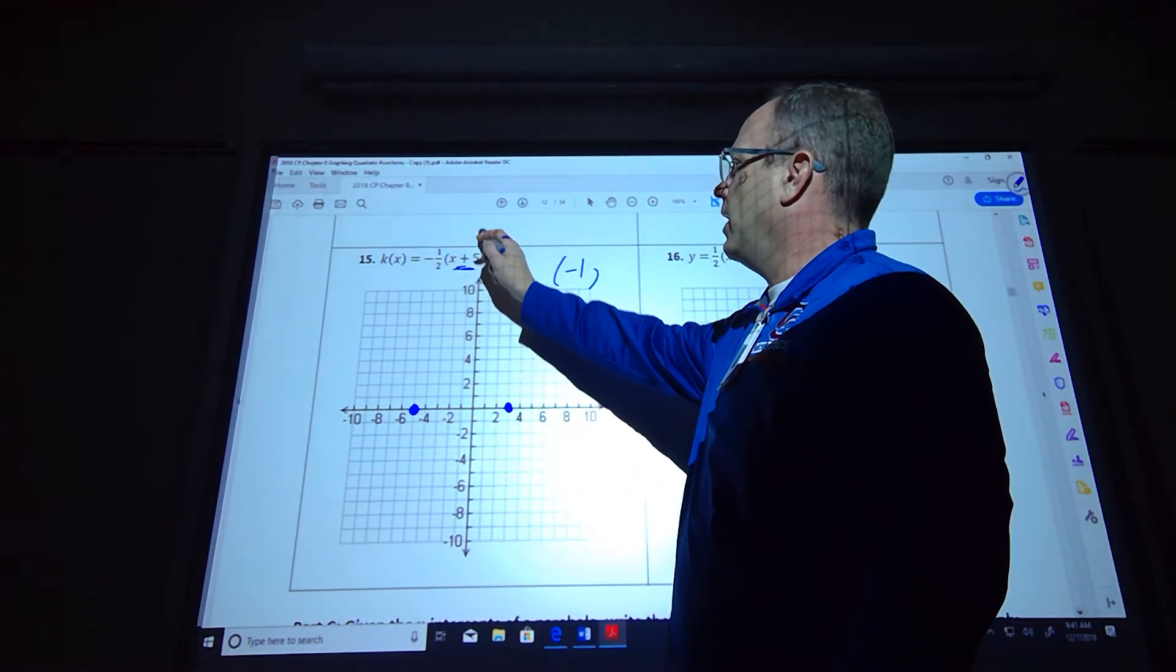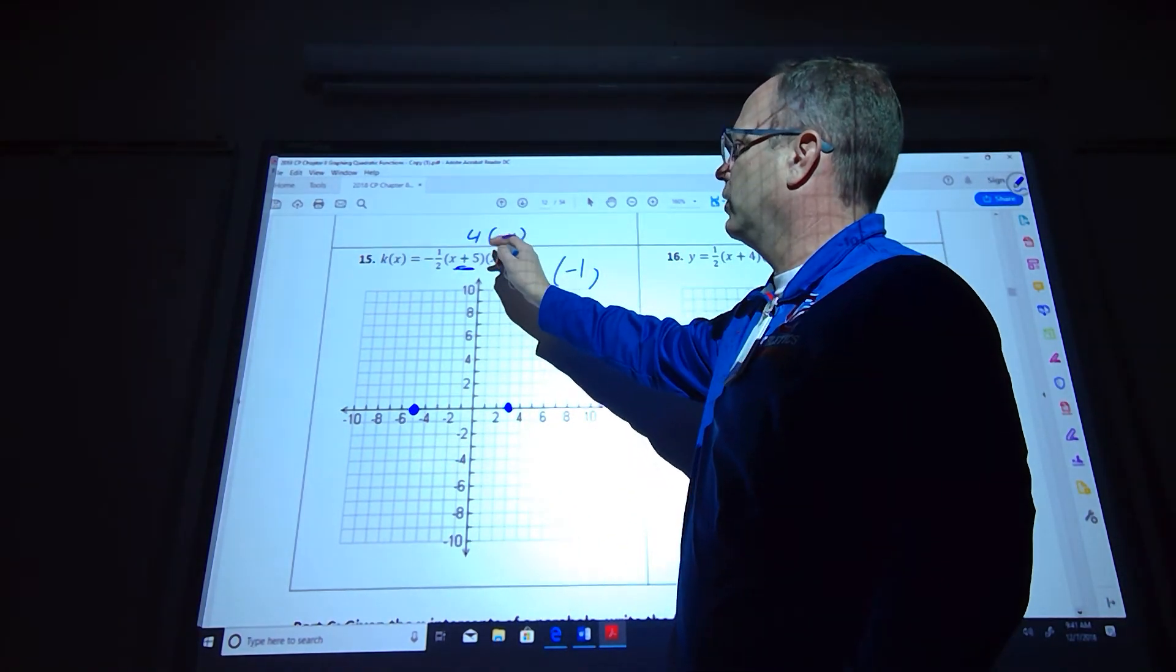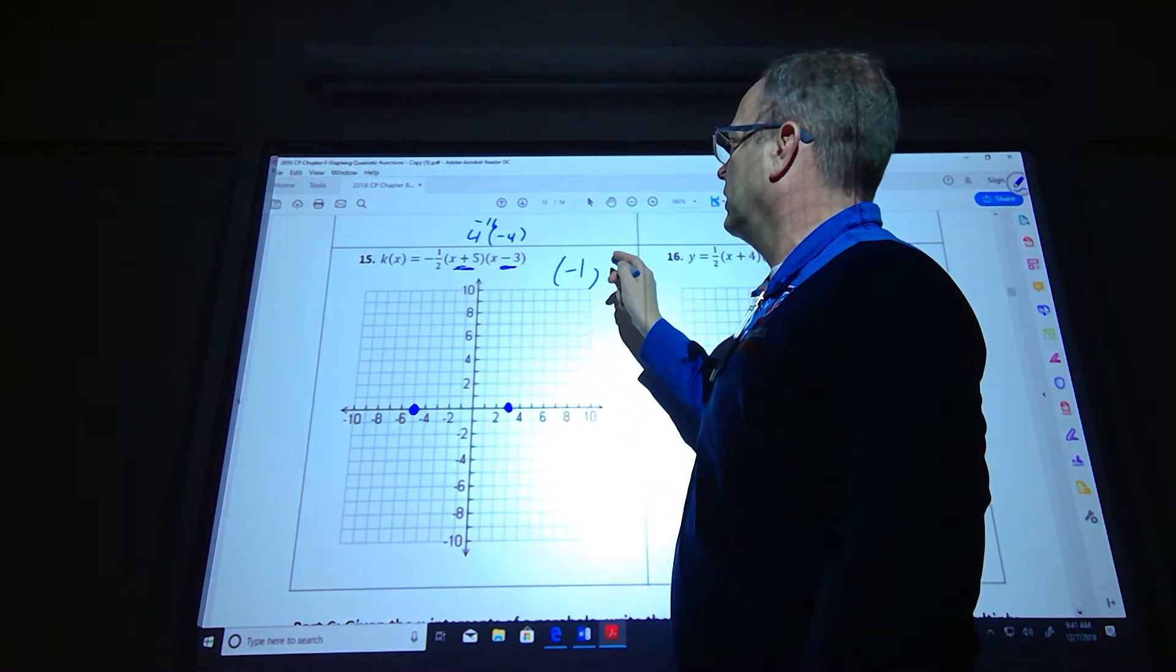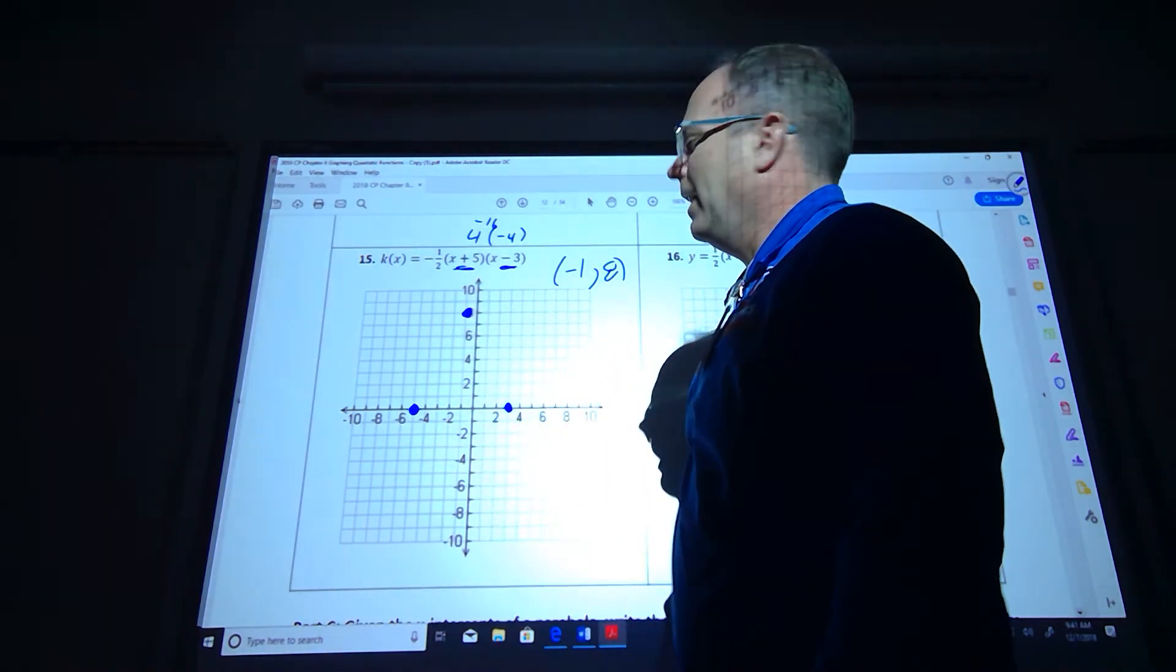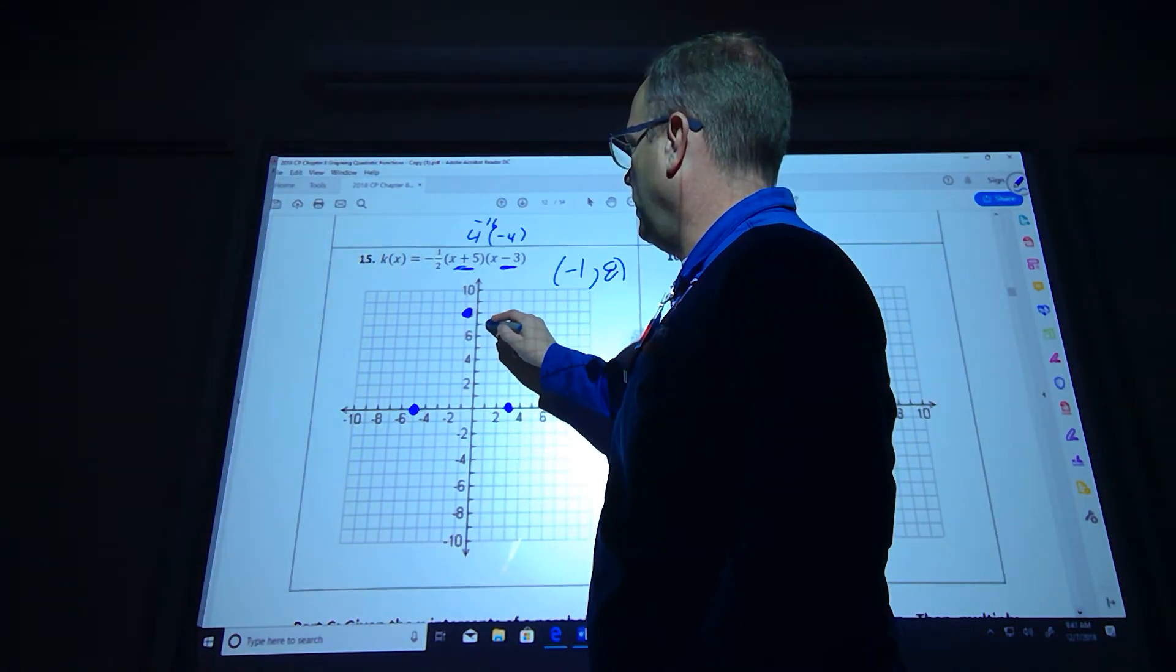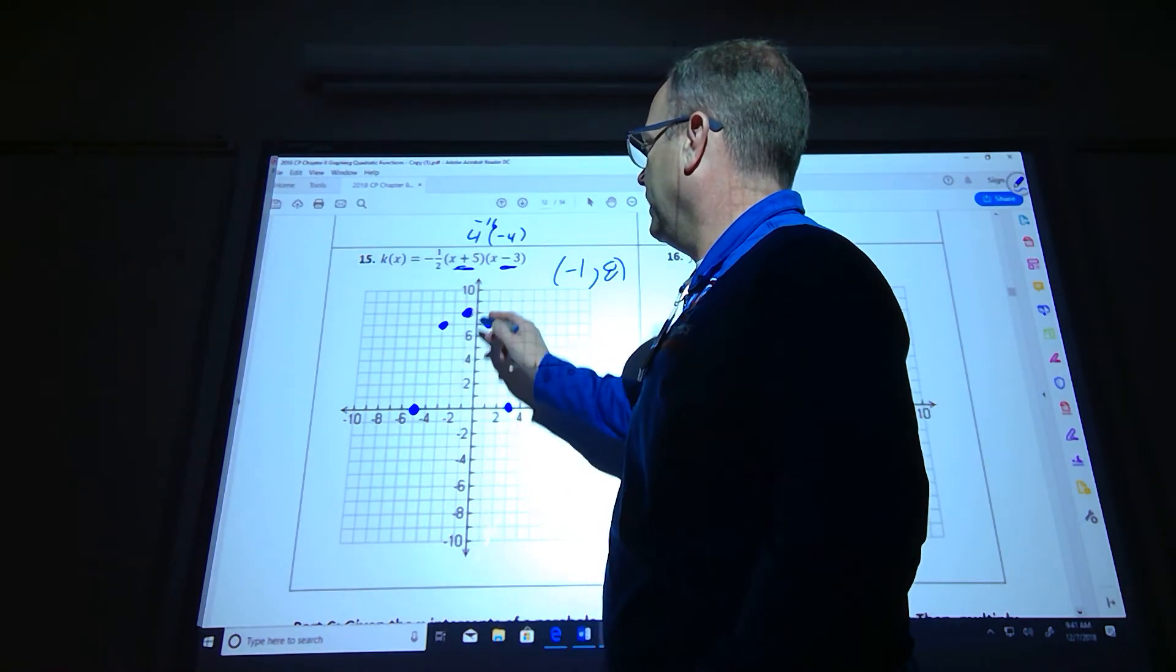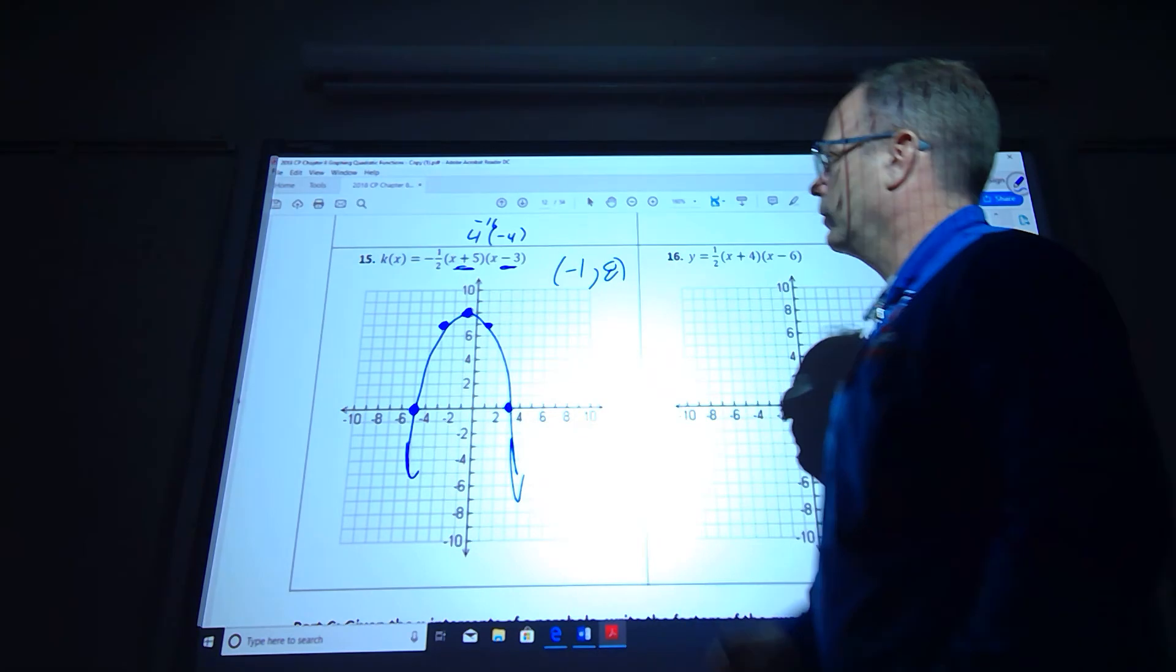Negative 1 plus 5 is 4, negative 1 minus 3 is negative 4, so that's negative 16. Negative 16, and then negative half of negative 16 is positive 8. So at negative 1 comma 8, we get this. And then remember, because it's a half and it's opening down, I'm actually going to go right 2 down 1, left 2 down 1. And that's going to work out nicely to get the rest of our graph in there for us.